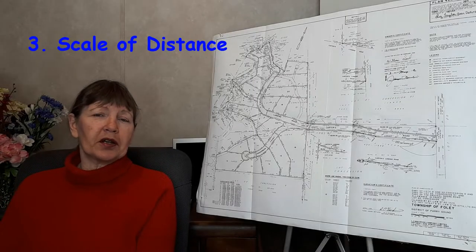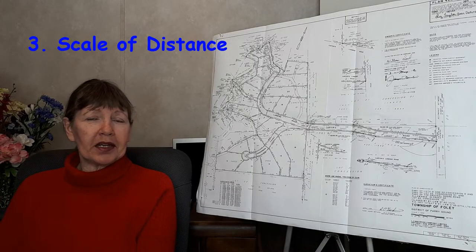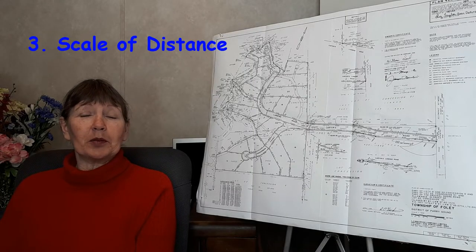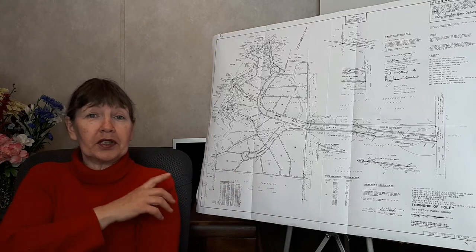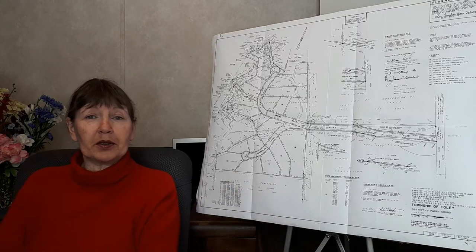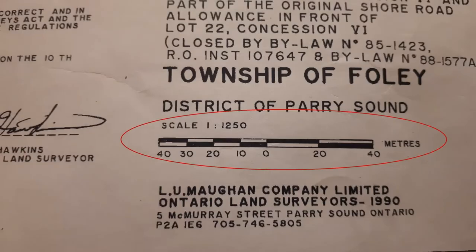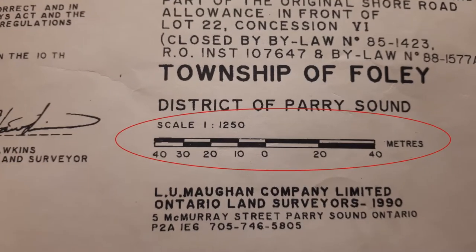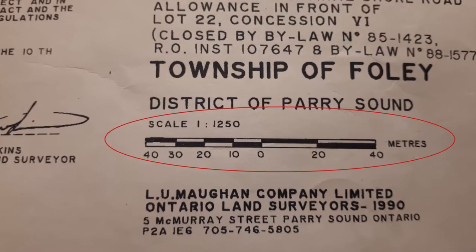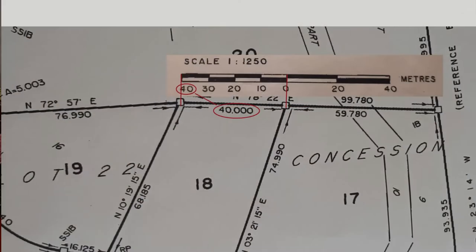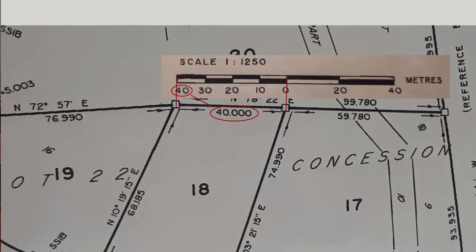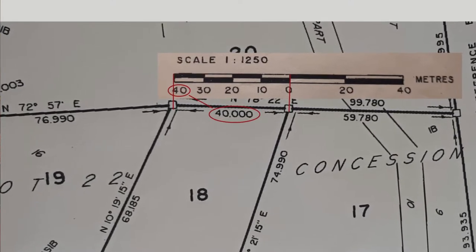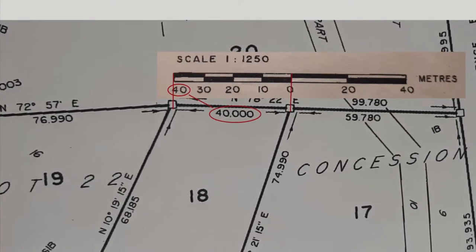While surveyors are drawing the plan of survey they need to scale down the measurements and the information that's on the land so it will fit on a piece of paper. On the plan they display what's called the scale of distance, which tells you the ratio between the measurements on the land to the measurements showing on the plan.